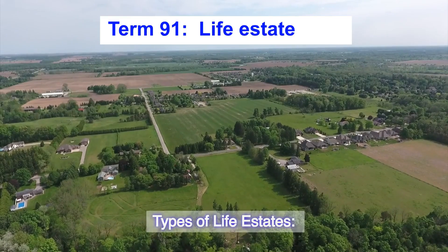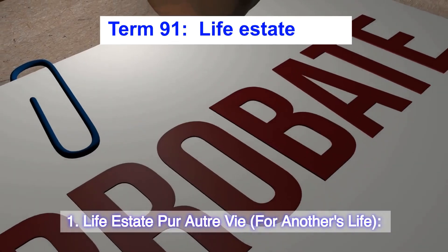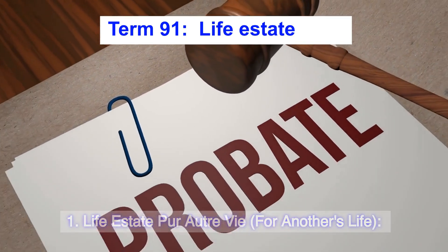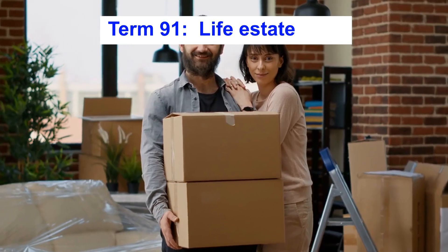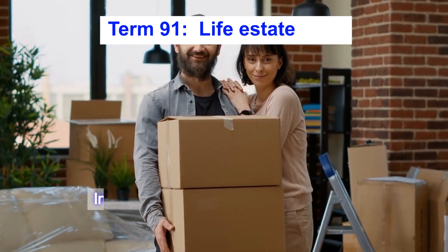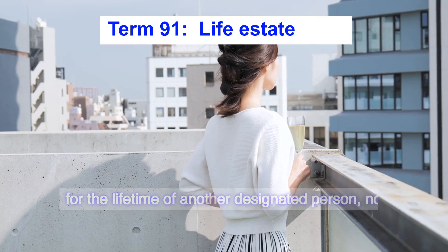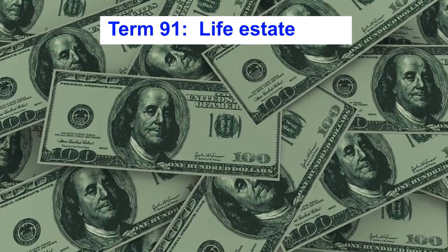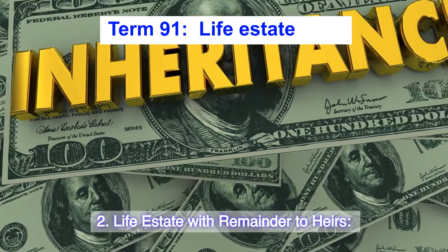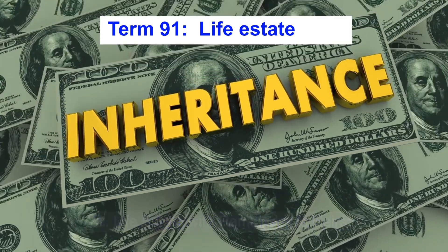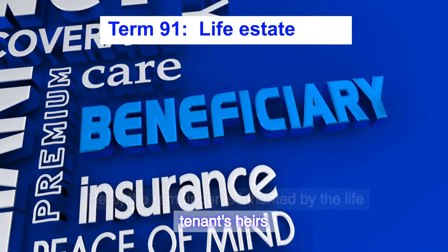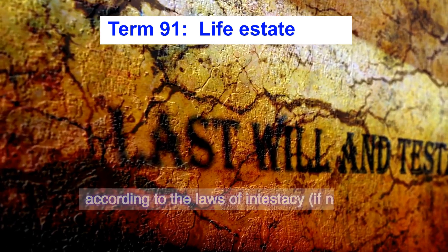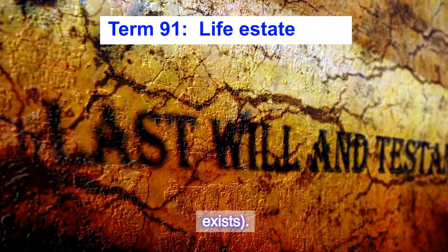Types of Life Estates. 1. Life Estate Pur Autre Vie — for another's life. In this type of life estate, the life tenant's ownership lasts for the lifetime of another designated person, not their own. 2. Life Estate with Remainder to Heirs. Here, the remainder is inherited by the life tenant's heirs according to the laws of intestacy, if no will exists.